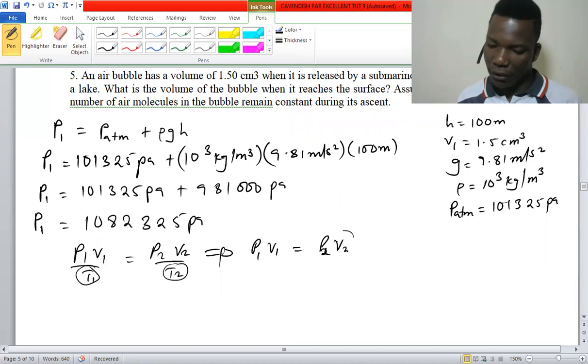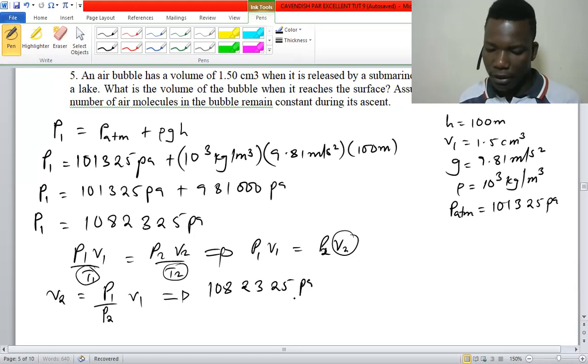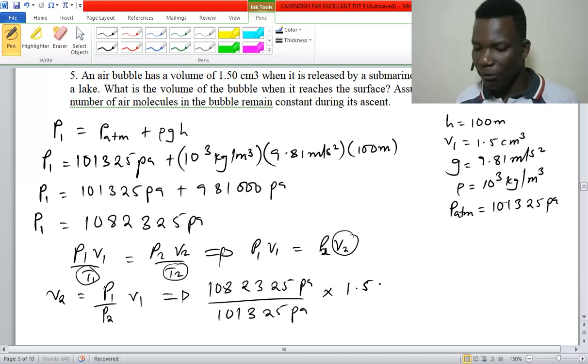So V2 is going to be P1 over P2 times V1. This is going to be 1082325 Pascal over the atmospheric pressure, 101325 Pascal, times the initial volume, which is 1.5 cubic centimeter.